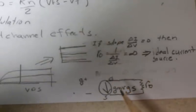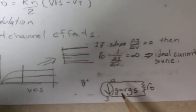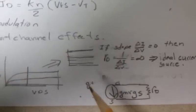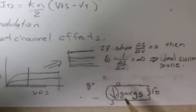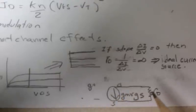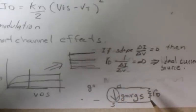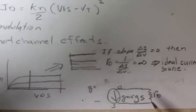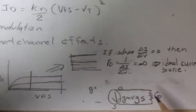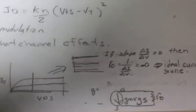So the electrical symbol of this would be a current source, GM times VGS. So whatever voltage is here is multiplied by the transconductance to turn it into a current. And you have an output resistance, just like a current source. If it were an ideal current source, this resistance would be infinite and would drop out.